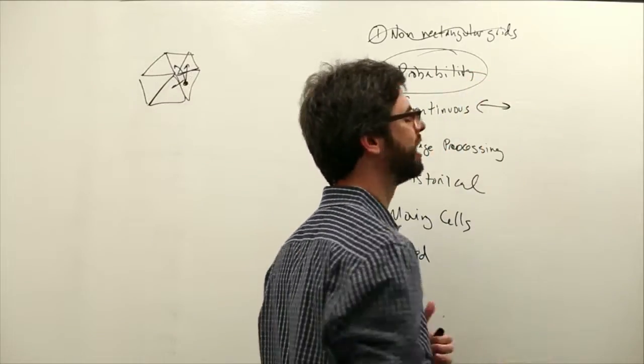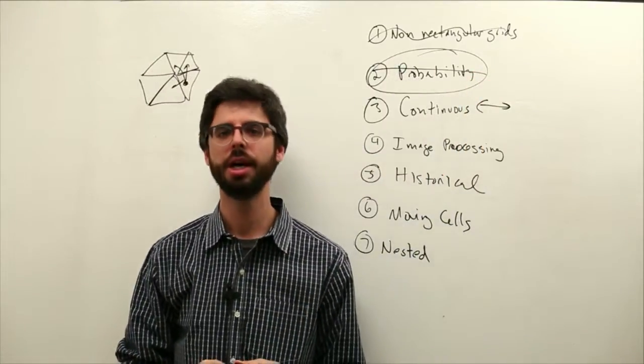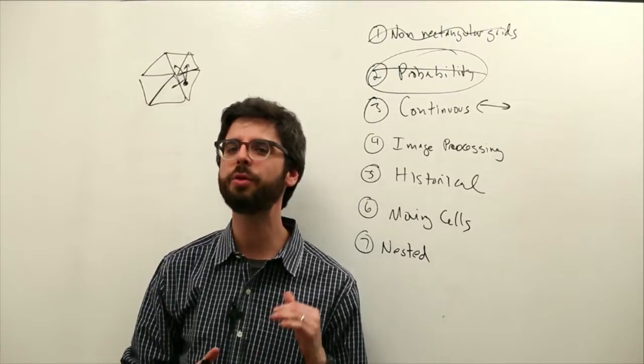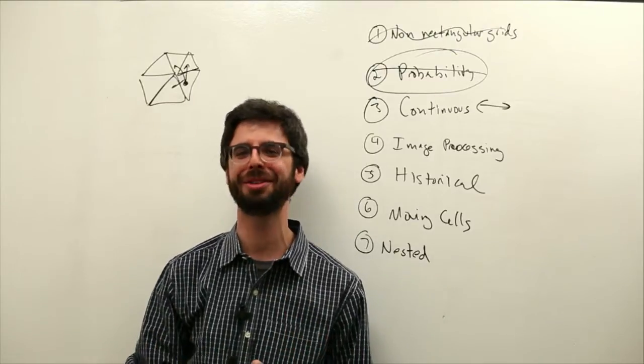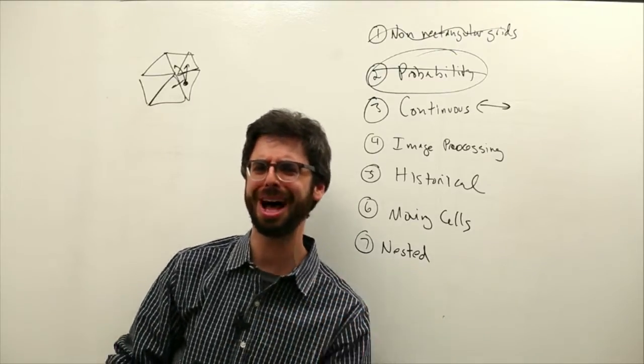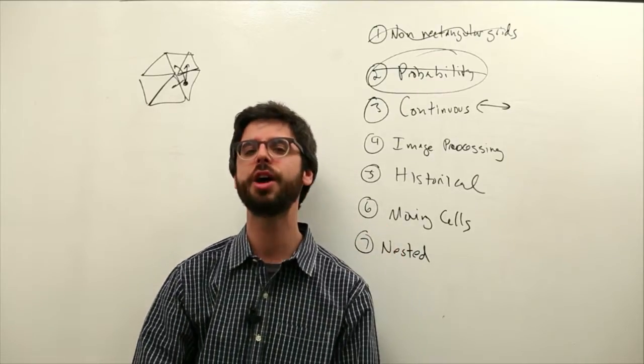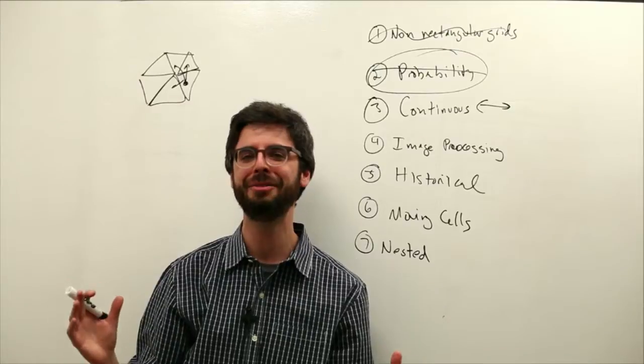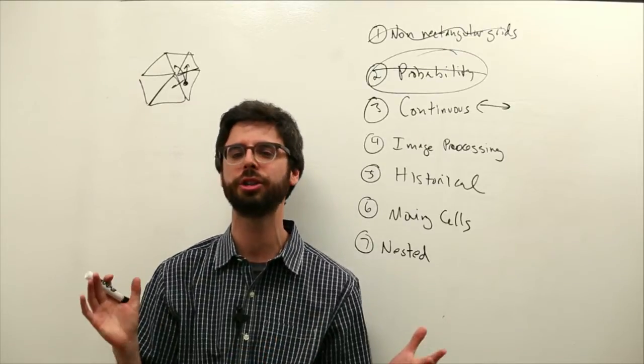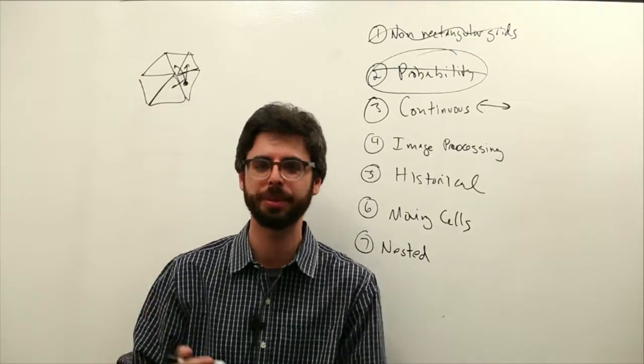Another thing you might think about is this idea of a continuous state. So we've only scratched the surface of states - 0 or 1, alive or dead, black or white. If you look at Wolfram's new kind of science, there is a wide variety of implementations with larger states - 4 possible states, 8 possible states.